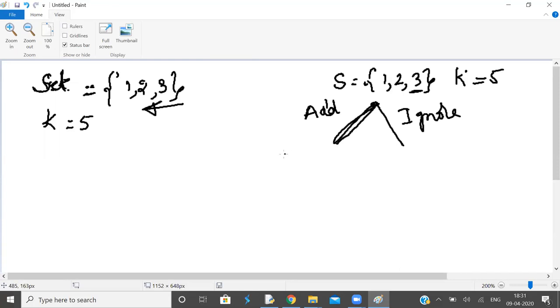So what are remaining elements in the set? The set has only two elements, 1 and 2. And what is remaining k? Because you already added 3, remaining sum is 2. In the ignore case, you have two elements and k remains 5.